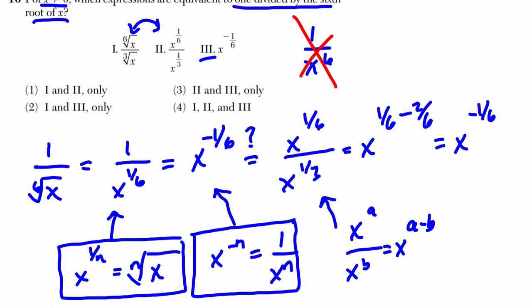So that does equal x to the negative 1/6th, which then equals 1 over x to the 1/6th. And these are both the same thing, so they're all equivalent. 1, 2, and 3.